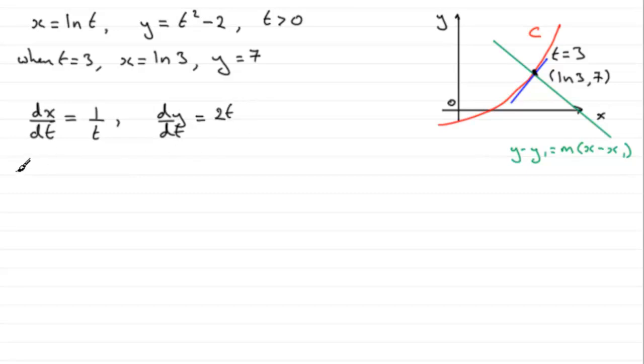So for dy by dx, dy by dx by the chain rule is going to be equal to dy by dt multiplied by dt by dx. Now we've got dy by dt, it is equal to 2t. And if we multiply this by dt by dx, so we can just reciprocate this and we get t, which equals 2t squared.